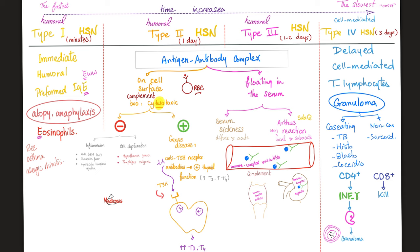How about Type 4? Type 4 is the most delayed — about 72 hours, slightly less or slightly more. This is cell-mediated. Instead of sending antibodies, T lymphocytes go face-to-face to kill the bacteria. We have cytotoxic CD8 T cells that kill. If we can't kill the invader, at least we can surround it in a granuloma. This granuloma can have caseous necrosis — caseating granuloma — as in tuberculosis, histoplasmosis, blastomycosis, and coccidioidomycosis. Or it could be non-caseating, such as sarcoidosis. CD4 T lymphocytes secrete interferon-gamma, which stimulates macrophages to make the granuloma.